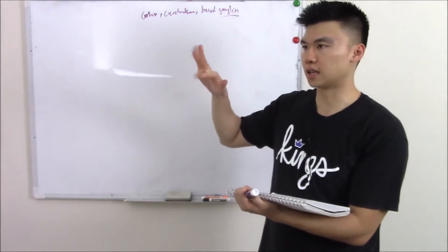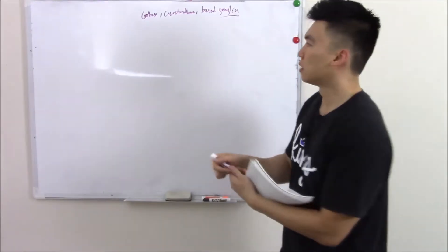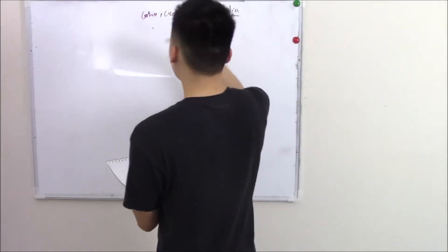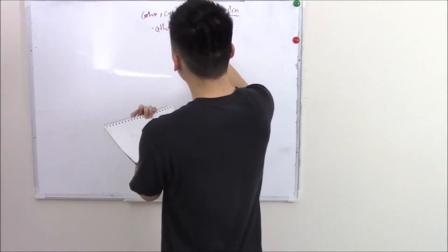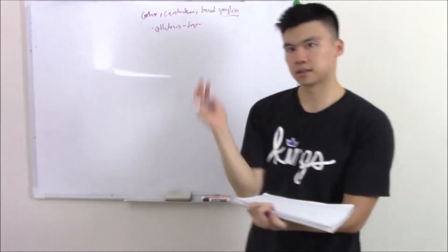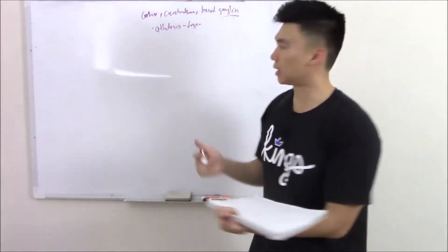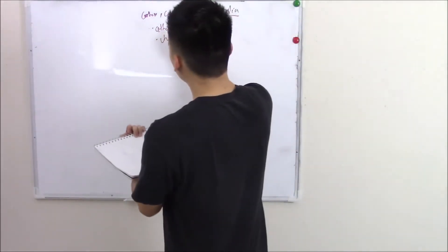You can have things like athetosis which is kind of like finger writhing. If you're curious always just YouTube it. They have great examples. You can have chorea which is kind of fluid dance-like motion.